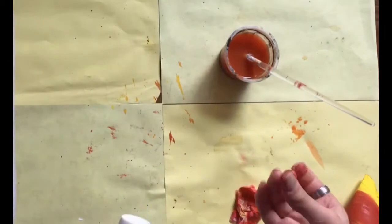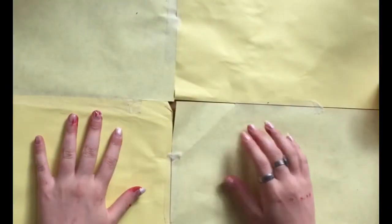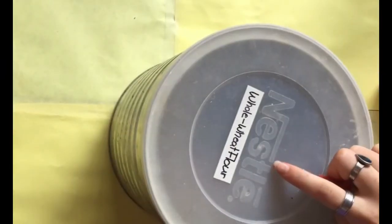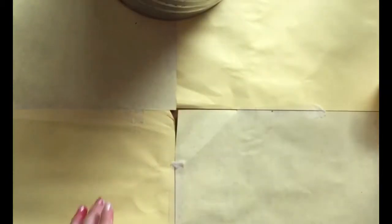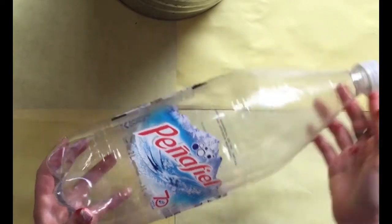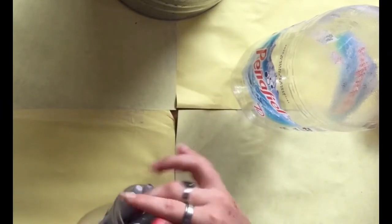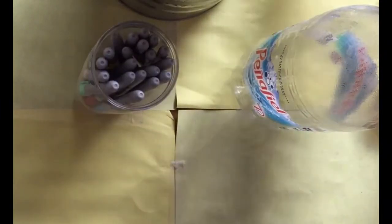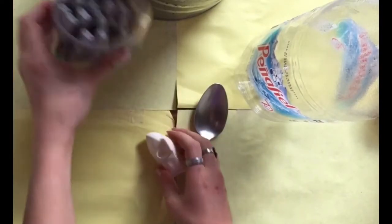So the third craft, you'll need flour or any other like rice or something. Then you'll need a small bottle. I only have a big one, so yeah. Then you'll need again sharpies, and you'll need a spoon, and you'll need a balloon.